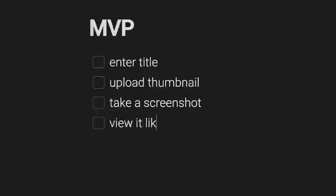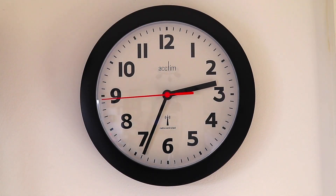Once I have a problem to solve, I flesh out the solution. For my first app, the problem was not having an easy way to compare YouTube thumbnails side by side. I broke the idea down into its essential features to create an MVP. This avoids wasting time on features that might not even matter. With the MVP defined, I set a start date and a hard deadline — seven days for my latest app based on what I could realistically handle. A deadline focuses the mind like nothing else, helping cut through distractions.